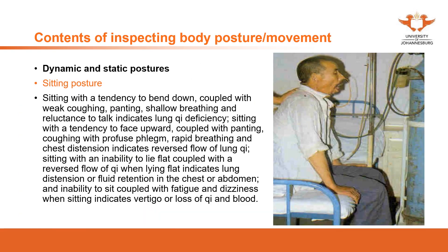The first posture we're going to talk about is the sitting posture. As you can see from this image, the patient is sitting and panting, indicating difficult breathing. This kind of patient, who is reluctant to talk, indicates qi deficiency. But which organ's qi deficiency? You can combine this with other symptoms — such as coughing and panting related to the lung — so that indicates lung qi deficiency.